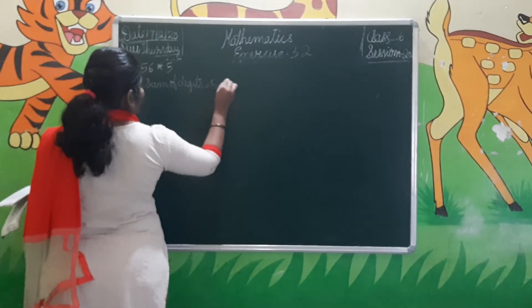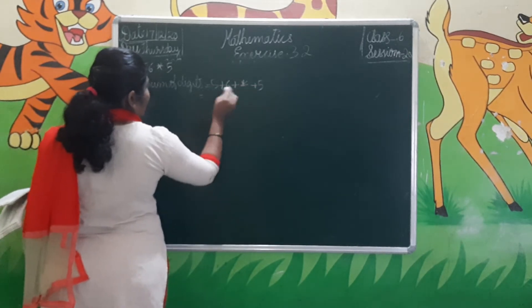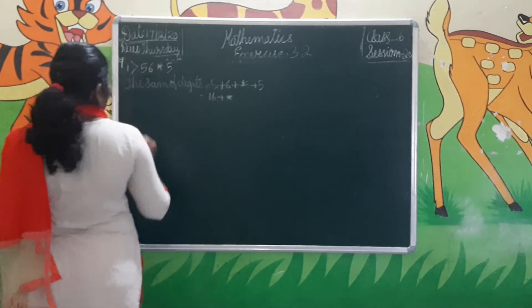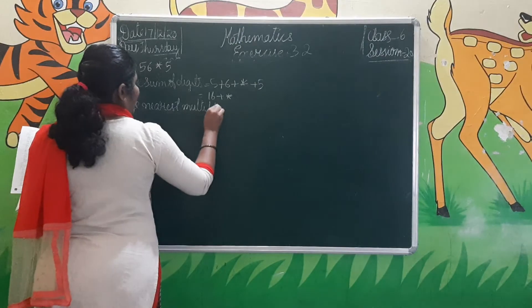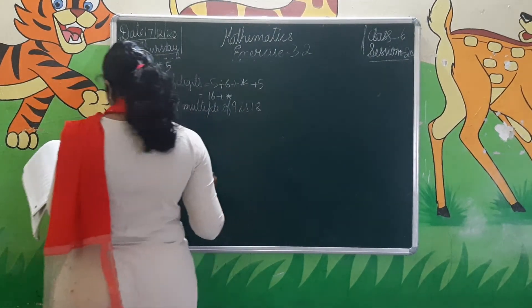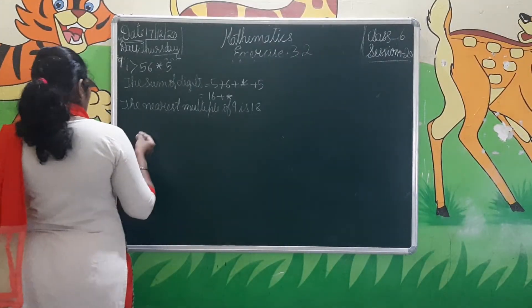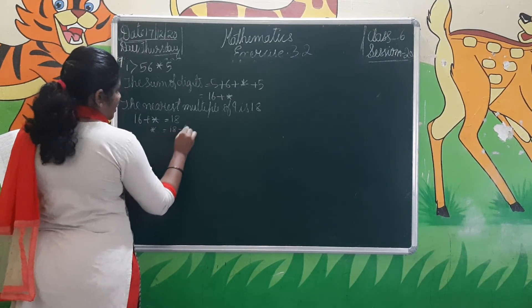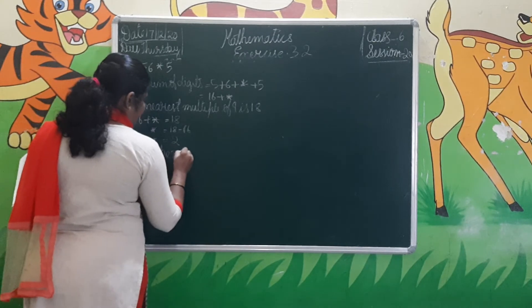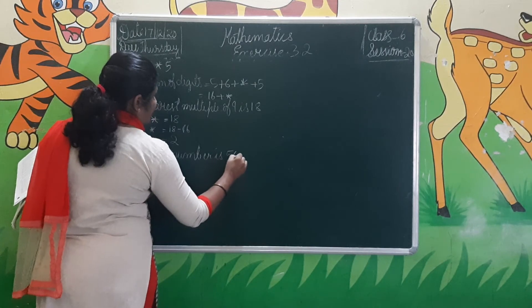Sum of digits = 5 + 6 + * + 5 = 16 + *. The nearest multiple of 9 is 18. So 16 + * = 18, which gives * = 18 − 16 = 2. Hence the number is 5,625.